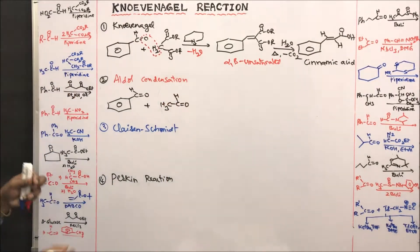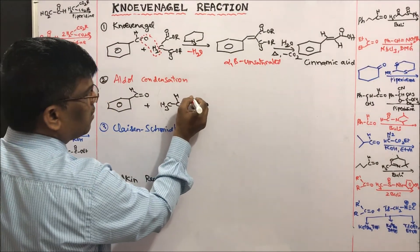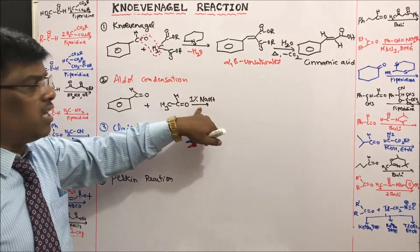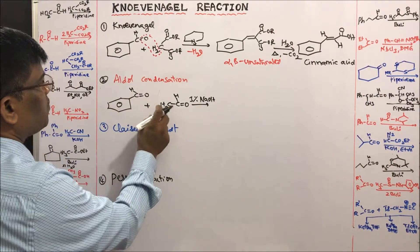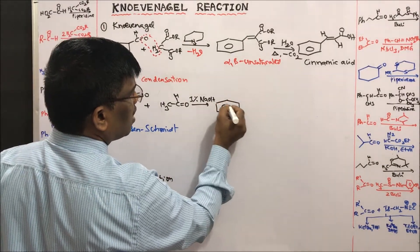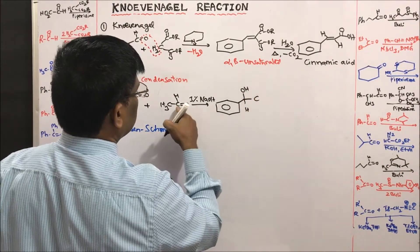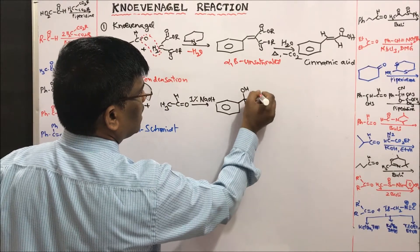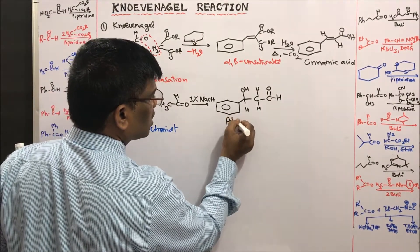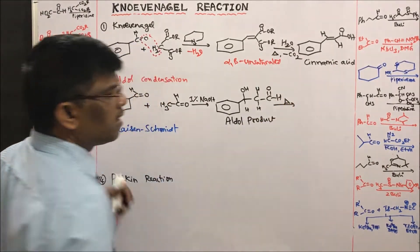In the Aldol condensation, we use acetic acid — an active methylene compound — reacting with benzaldehyde, which has an active hydrogen. In the presence of dilute NaOH (1% NaOH), the base abstracts the active methylene proton and it attacks the aldehyde carbon. The reaction proceeds to give the aldol product, which has a hydroxyl group and the CH-CH linkage.